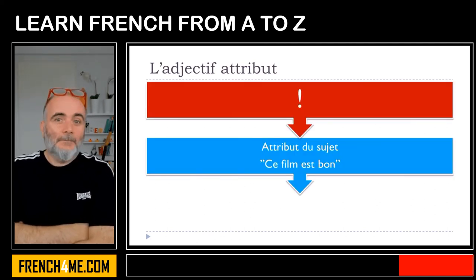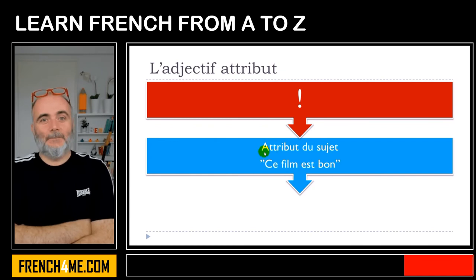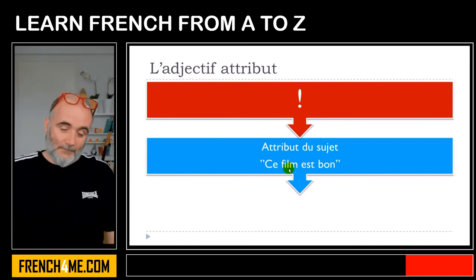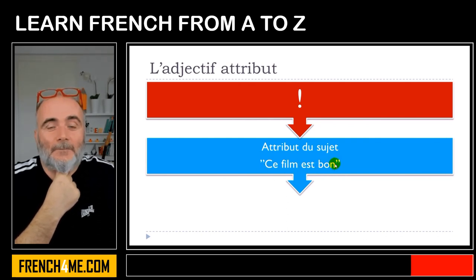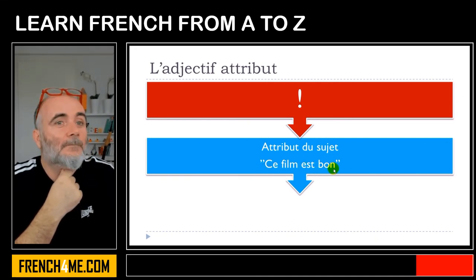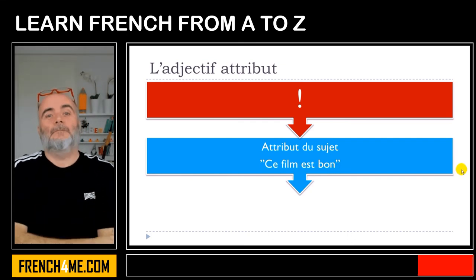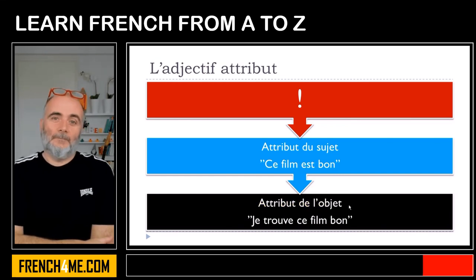Something important to remember: an adjectif attribut can be attribut du sujet, as we have seen so far. For example: ce film est bon. In that case you get the subject — ce film — then the verb, and after that the adjective. So bon is the attribut du sujet.